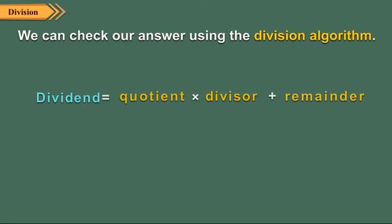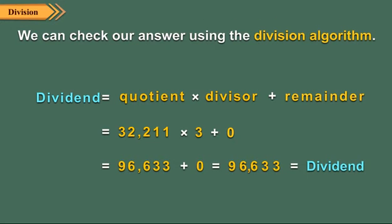We can check our answer using the division algorithm. That is, the dividend is equal to quotient multiplied by divisor plus the remainder. This is equal to 32,211 multiplied by 3 plus 0, which equals 96,633 plus 0, which equals 96,633 — equal to the dividend.